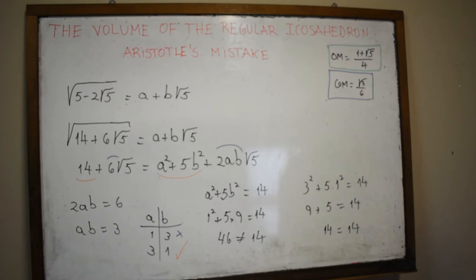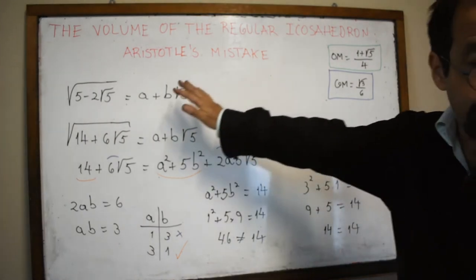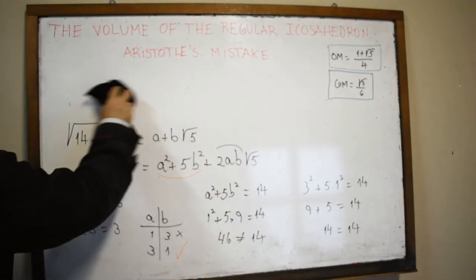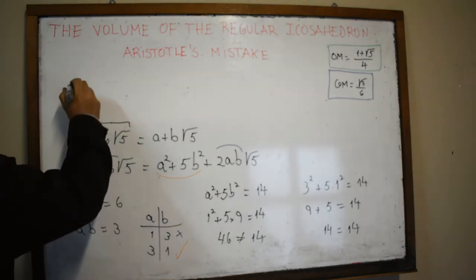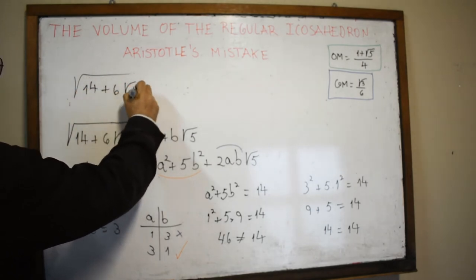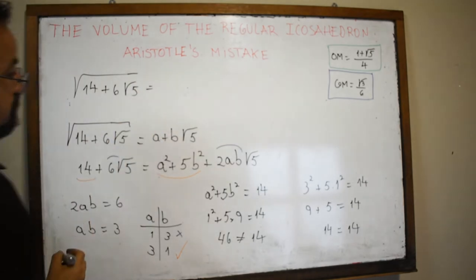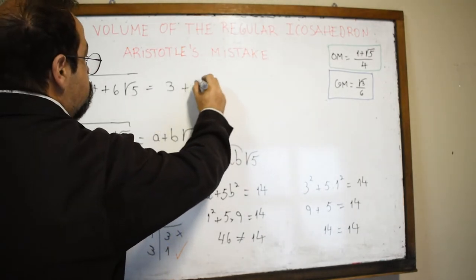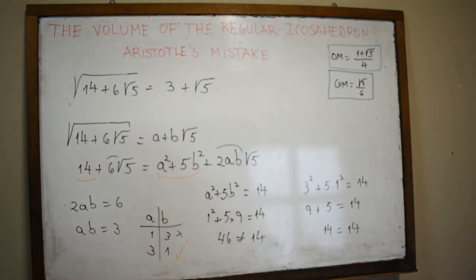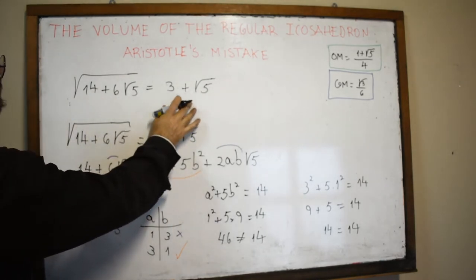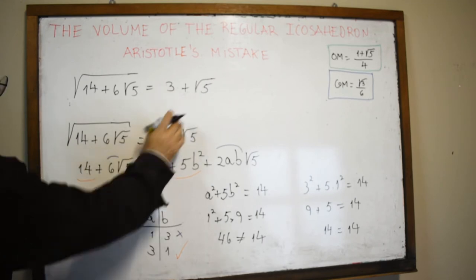This one works. So we can write √(14 + 6√5) = 3 + √5, where a = 3 and b = 1. We have made a substantial simplification, reducing an expression with two nested square roots to one with just a single square root.